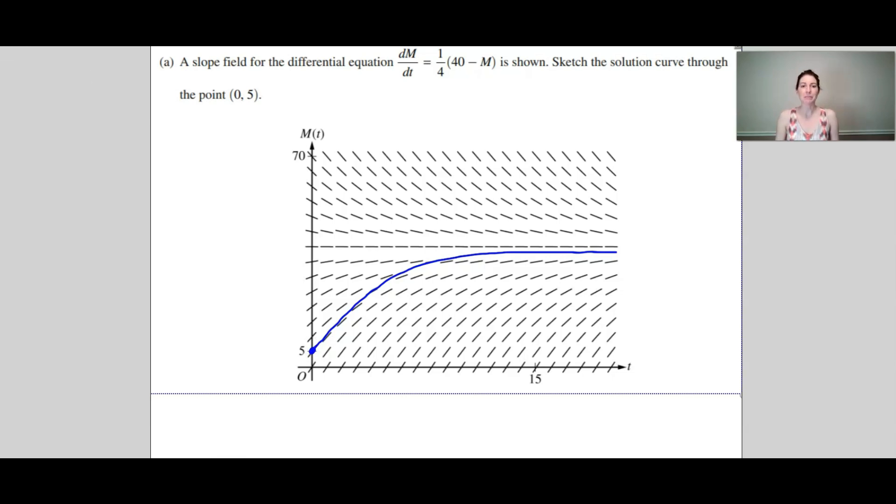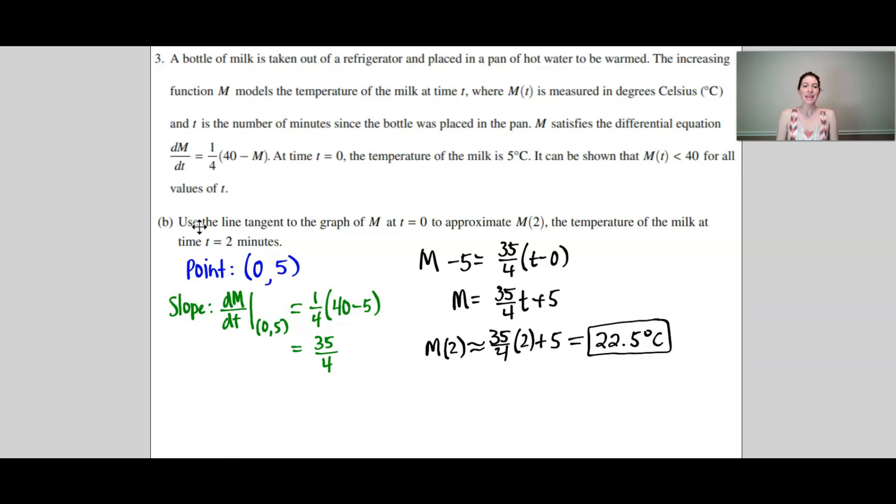Now let's look at Part B. In Part B it says to use the line tangent to the graph of M at t equals 0 to approximate M(2). To write the equation of a tangent line you need two things: you need a point and you need a slope. Well the point we are given—at a time value of 0 it says the temperature of the milk is 5 degrees Celsius, so there is our point.